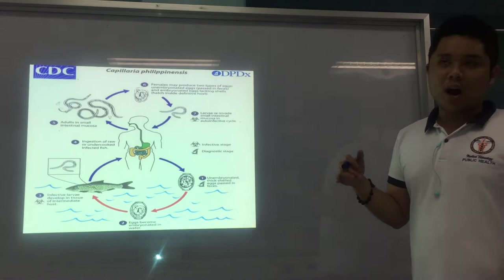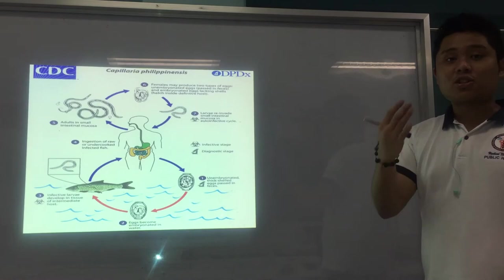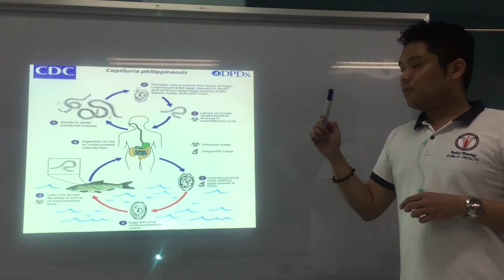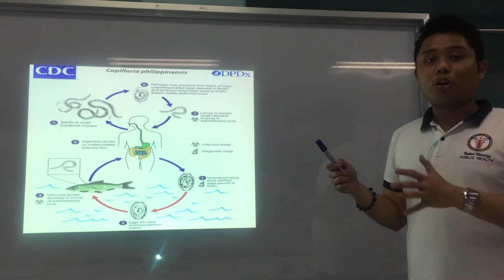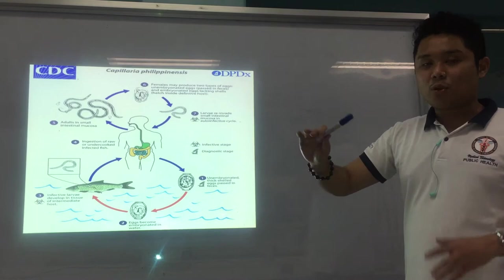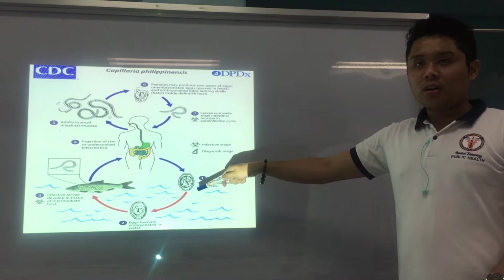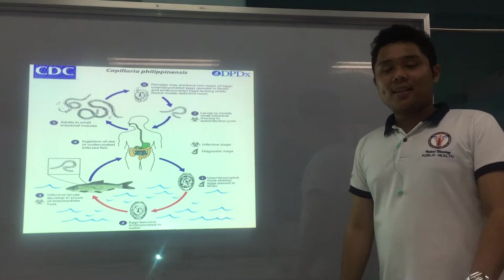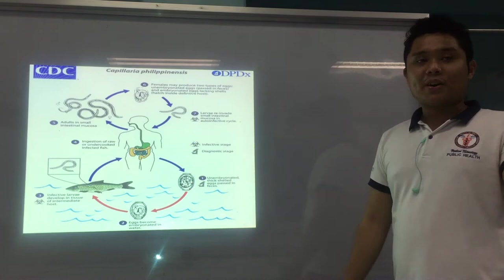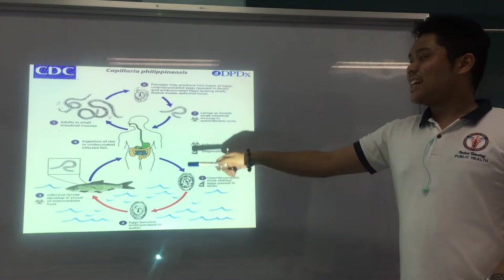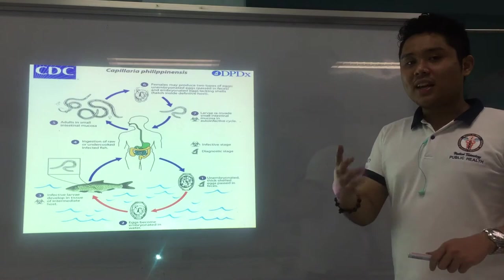This is the first nematode whose mode of transmission is ingestion of the larva, not the egg. For Capillaria, transmission is ingestion of undercooked or raw fish containing the larva. Once an infected human defecates, the stool goes into the water, eggs hatch, and the larva is eaten by freshwater or brackish fish like ipon, bagsang, and others. Humans ingest raw or undercooked fish containing the larva, which is released during digestion and grows into adults.